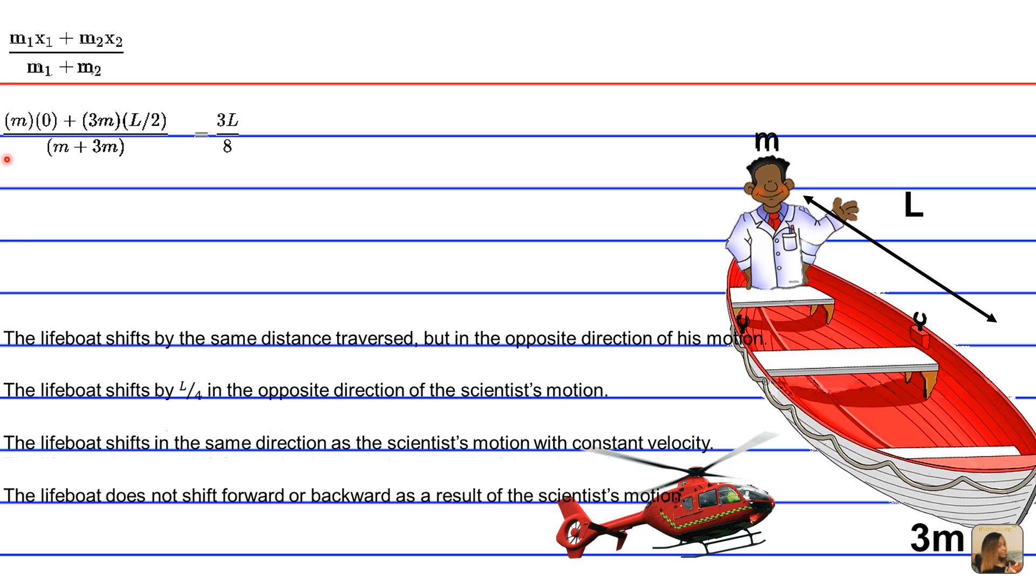And in case you don't know how this simplifies, well, m times 0 cancels out. And you're left with 3m times L over 2. And in the denominator, you have 4m, so the m's can cancel out.